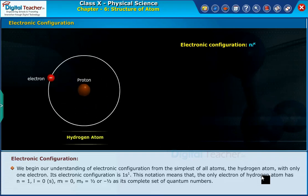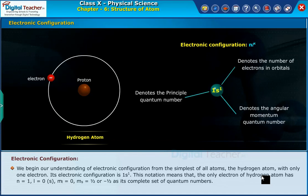We begin our understanding of electronic configuration from the simplest of all atoms, the hydrogen atom, with only one electron. Its electronic configuration is 1s¹.